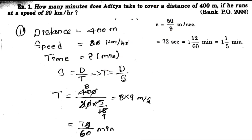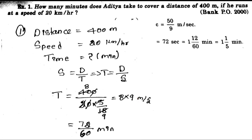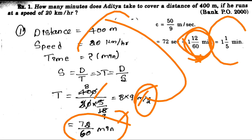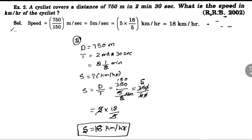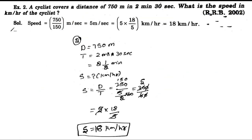Time equals distance by speed. Distance is 400, speed is 20 km. So meter is 5 by 18 — we divide this to get the time. We make the difference at our time and divide. The answer is 1 minute and 12 seconds. So here you have to take the distance and time. We have to use the formula: speed equals distance by time.